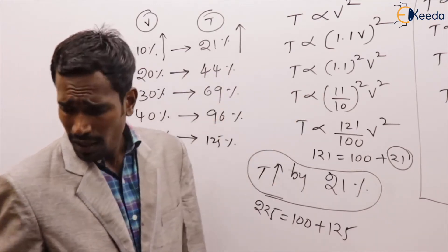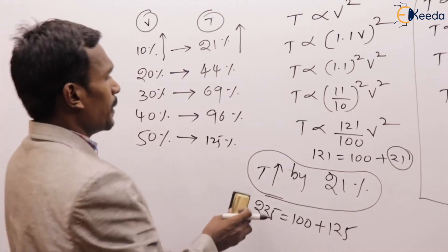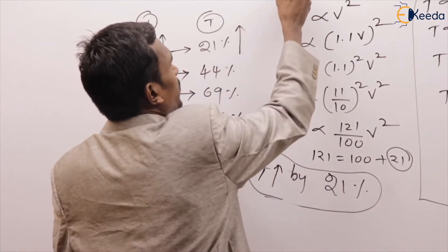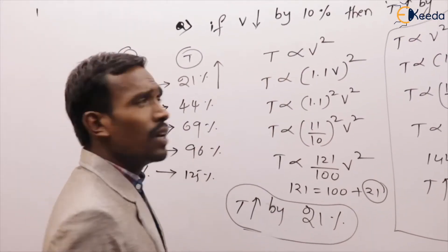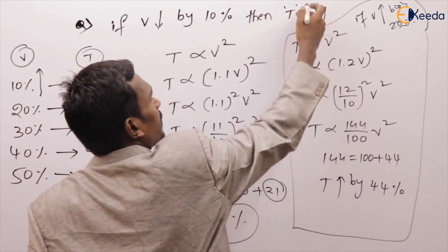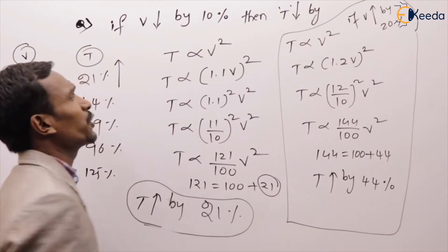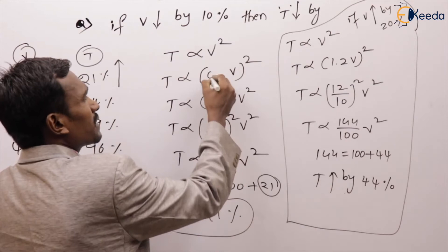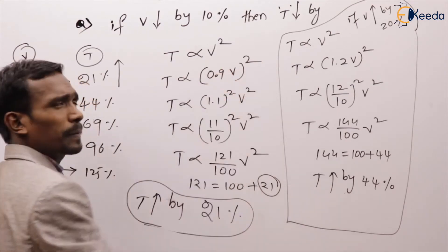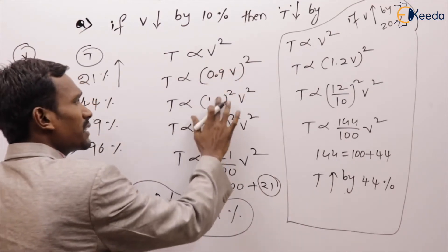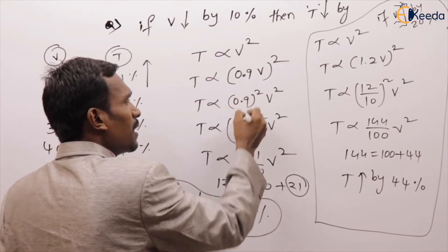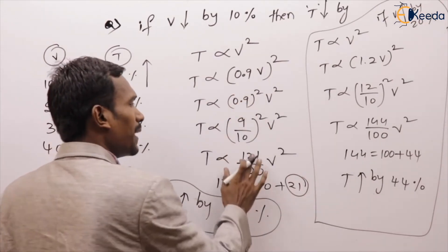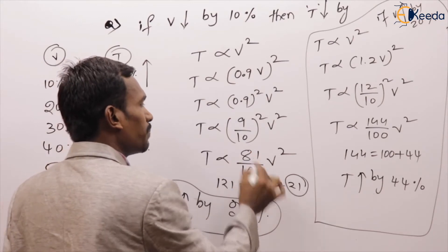Next question: if voltage reduced by 10%, then torque reduced by how much? If voltage is decreased by 10%, the factor becomes 0.9, which is 9/10. Squared gives 81/100.